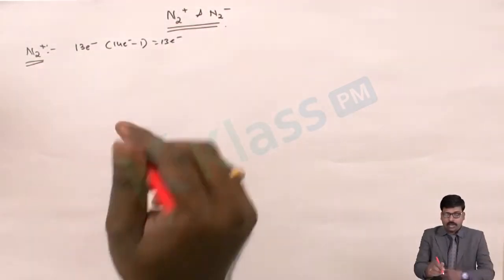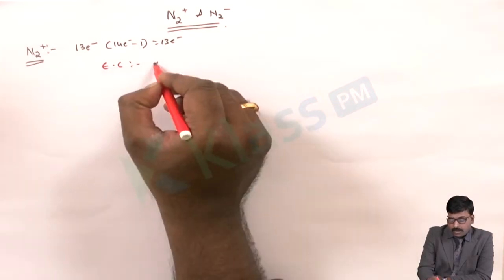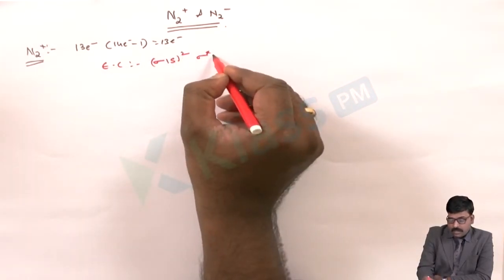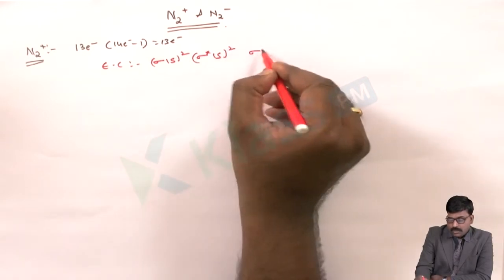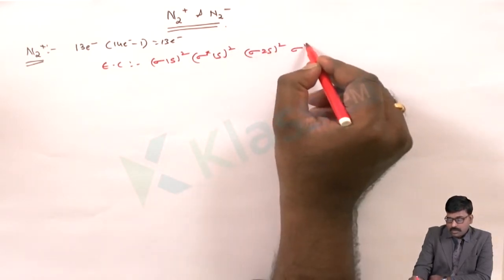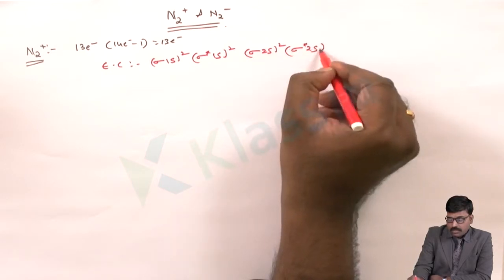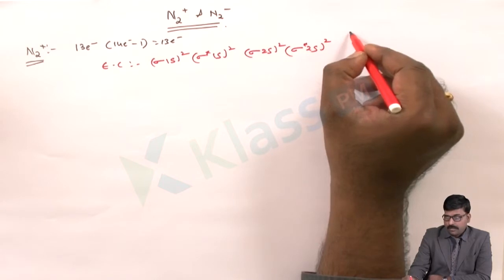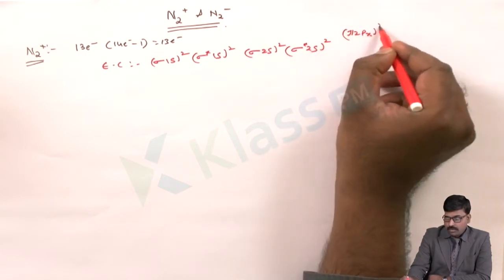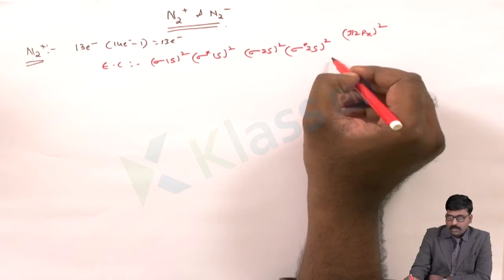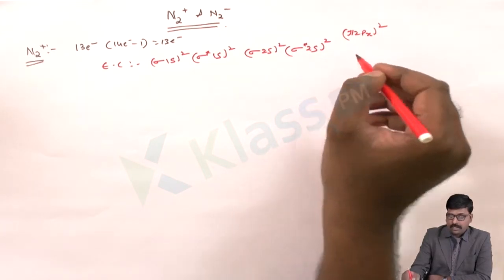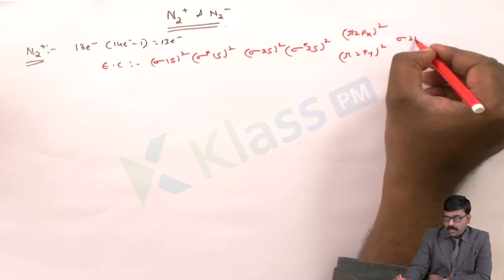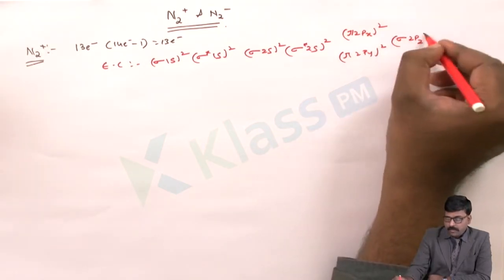The electronic configuration of N2 plus goes like this: sigma 1s2, sigma star 1s2, sigma 2s2, sigma star 2s2, then starting with the p orbitals: pi 2px2. That accounts for 8 electrons, so we need to fill 5 more. Continuing: pi 2py2, then sigma 2pz1.